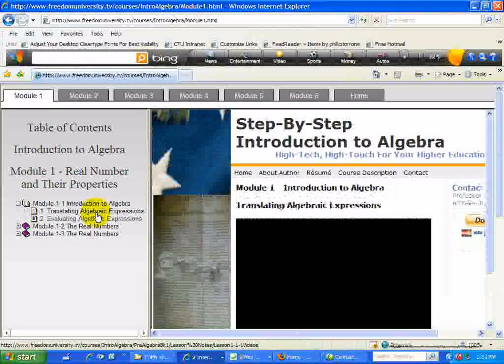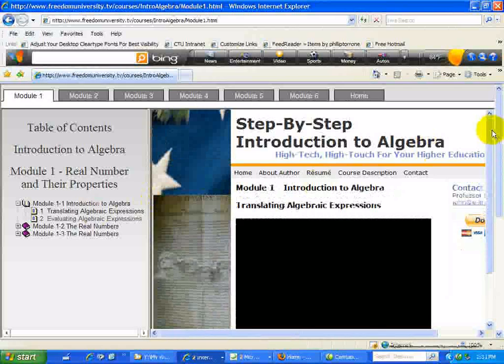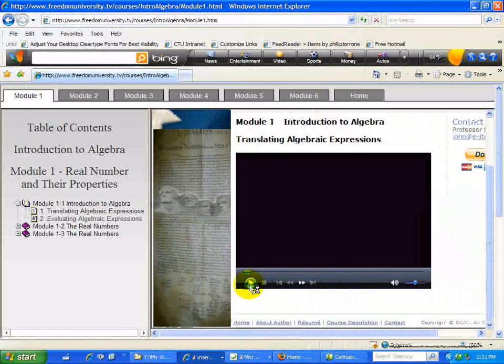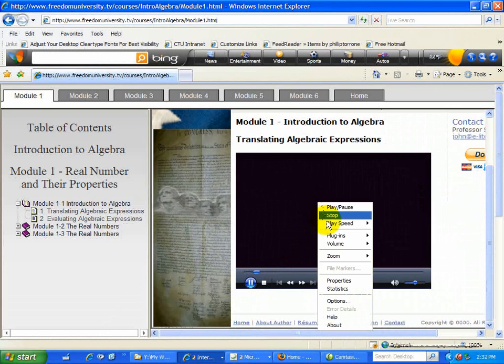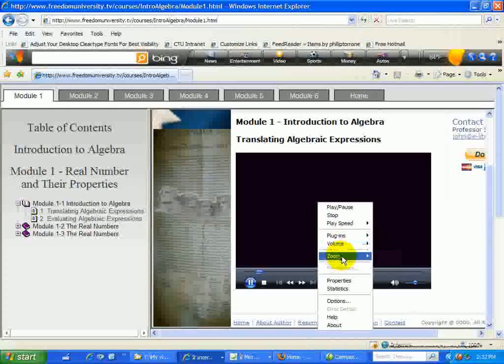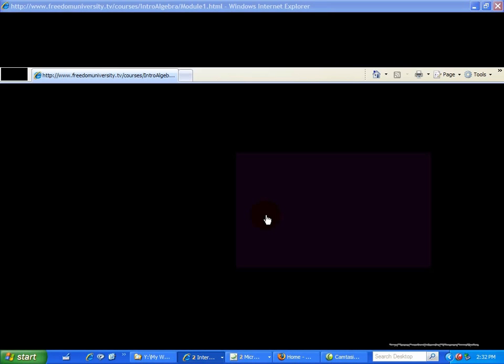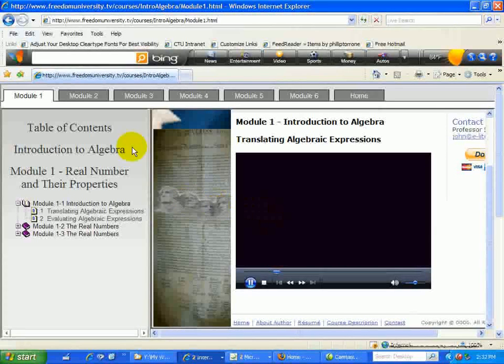So for example, when you click on Translating Algebraic Expressions, you get the video here. It's going to take some time to load up, and when it finally loads you can press the Play button. Now, this is kind of small, so what you can do is right-click after you press the Play button, select Zoom, and then zoom to full screen to see the entire video. To get out of this video, you press the Escape button found on your computer, and you're back to this display.